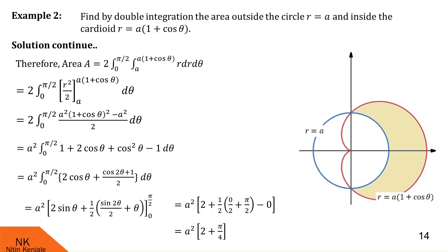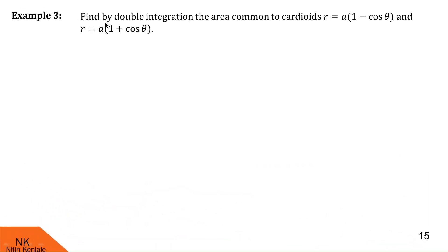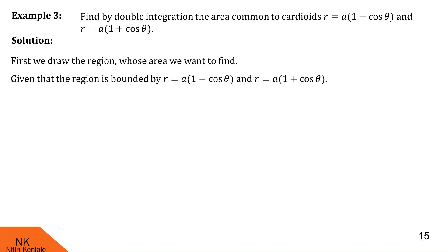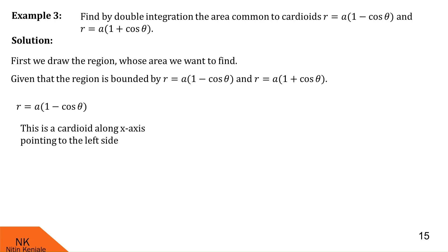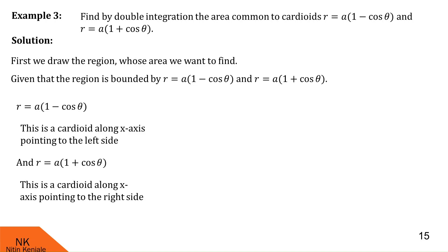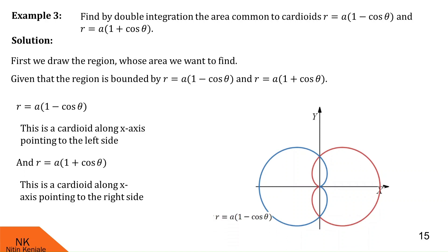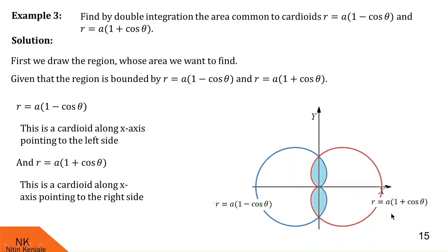Now let us go to example number 3. Here we are asked to find by double integration the area common to the cardioids r = a(1 − cosθ) and r = a(1 + cosθ). The cardioid r = a(1 − cosθ) points to the left along the x-axis, while r = a(1 + cosθ) points to the right. These two cardioids are shown: the blue is r = a(1 − cosθ) and the red is r = a(1 + cosθ). The shaded region bounded by both cardioids is the required area.